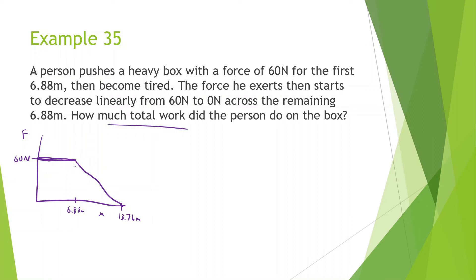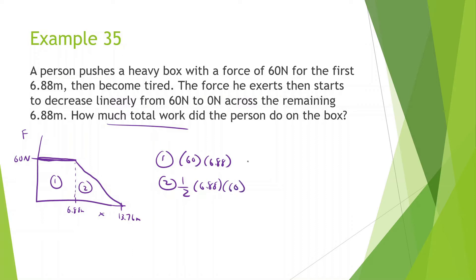To find total work, we find the area under the curve. Part 1 is a rectangle: base times height = 60 times 6.88 = 412.8 joules. Part 2 is a triangle: one-half base times height = 0.5 times 6.88 times 60 = 206.4 joules. Adding them together gives us 619.2 joules.